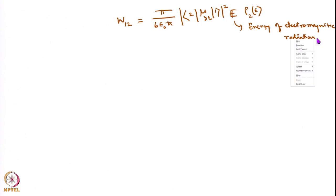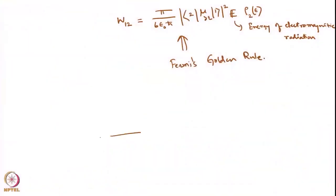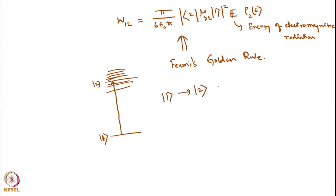Now, this is based on Fermi's golden rule. Fermi's golden rule applies because there is a density of states — it goes from a discrete initial state to a state embedded in some density. But now let us consider: you have initial state 1 and final state 2. I want to look at only this discrete 1-to-2 transition with no density.